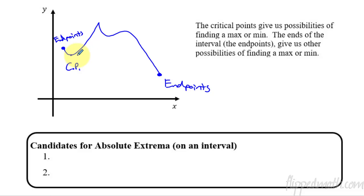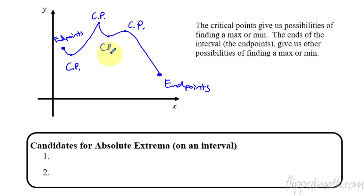I'll call this a CP — critical point — because the derivative is zero right there. It has a horizontal tangent line. This one right here is also a critical point. Why? Because the derivative is undefined at the corner. Here we have another critical point because of the slope being zero. We have a minimum, and then here the slope is also zero so we have a maximum — that is a critical point. So here we have critical points and endpoints. These things, if we can find them on a function, will help us identify all the candidates for the possibility of an absolute extrema.